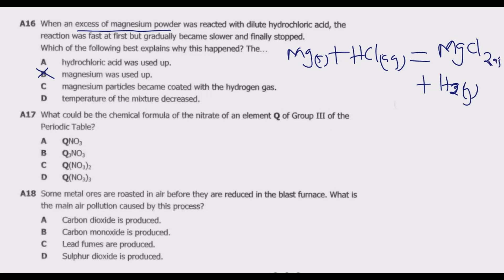Hydrogen is a gas. If you look at option C, magnesium particles became coated with hydrogen gas — this is incorrect because the gas is evaporating. Option D, temperature of the mixture decreased, is also incorrect because a temperature decrease alone cannot make the reaction stop. Hydrochloric acid was used up because the magnesium is in excess, so option A is the correct answer.